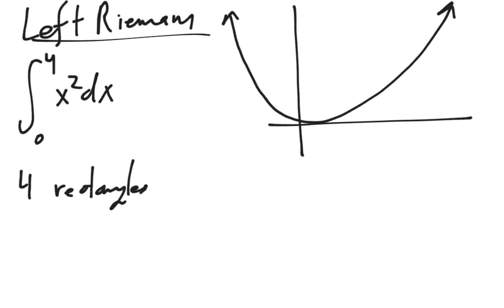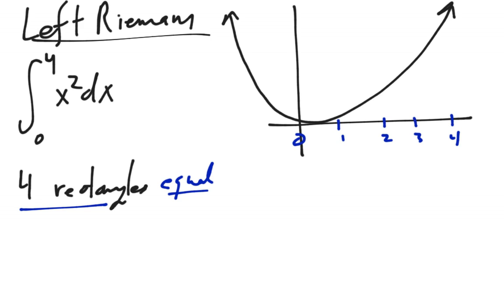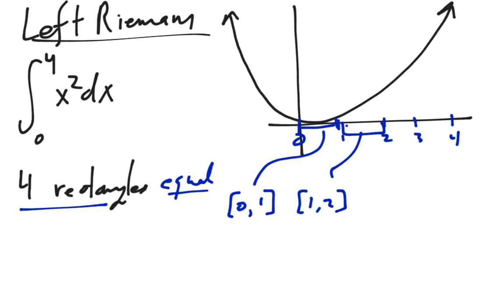We have our interval from 0 to 4, so we have 0, 1, 2, 3, and 4. Whenever we do a Riemann sum, you want to figure out: I'm doing four rectangles, and in this case they're all going to be equal length, so I need to break it up into four equal-length intervals. So I have 0 to 1, 1 to 2, 2 to 3, and 3 to 4. That's the first step.